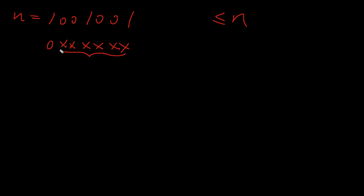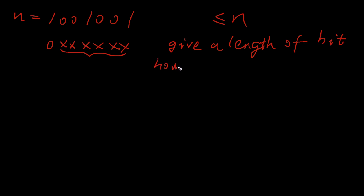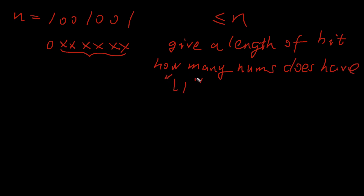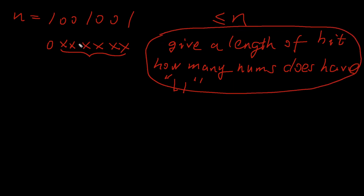Let's try to solve the sub-problem first. The sub-problem is: given a length of a bit string, how many numbers do not have consecutive ones? For example, given a 6-bit value, how many numbers with 6 bits don't have consecutive ones? We can go back to the second approach — the first bit can be either zero or one, giving us two scenarios to solve recursively.